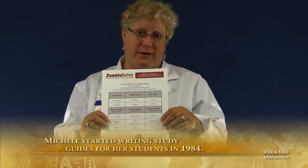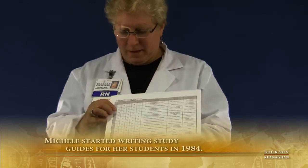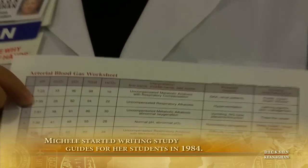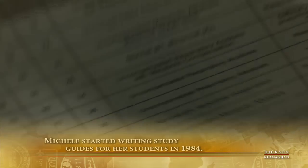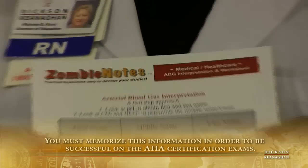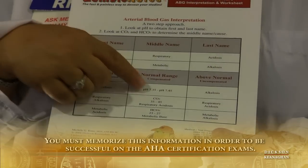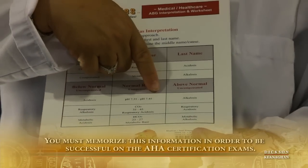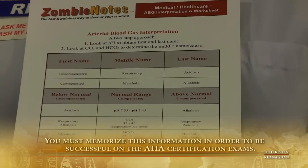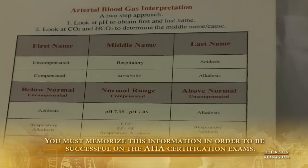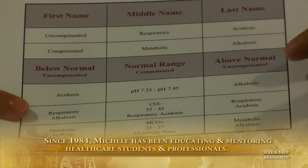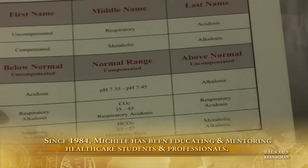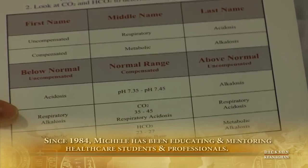Let's look at a second example to get you on your way to understanding arterial blood gas interpretation. Let's take a look at a pH of 7.55. Remember, look at the pH first and name it. 7.55 is on the other side — it is high, which gives us an alkalosis. Abnormal and high: first name, uncompensated; last name, alkalosis. We have an uncompensated alkalosis. Let's see who caused it.